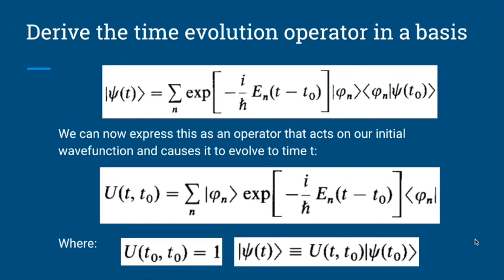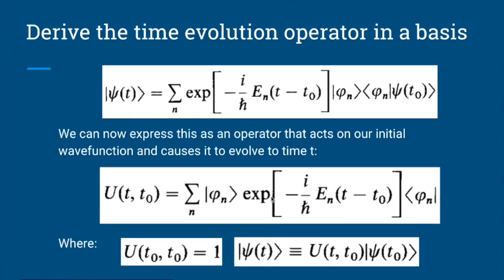Now we're trying to get a time evolution operator out of this. We have an initial condition — the wave function at time t₀. Everything except this initial condition is the operator acting on it. This exponential function here is a regular exponential, so it commutes with the ket basis function, and we can move that ket basis function over. Then this whole chunk of stuff is our time evolution operator — it's all the stuff operating on the wave function at time t₀.